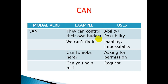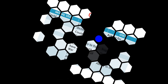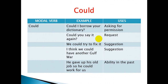You can also use 'can' for asking permission. For example: 'Can I smoke here?' — you are asking someone to permit you to smoke. For requests, you can say: 'Can you help me?' or 'Can you take my plate?' — you are requesting something from someone.